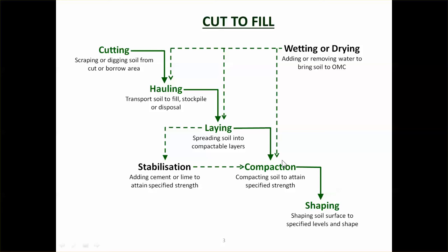Then there's compaction. Once you've got it into that 200 to 300 millimetre layer, you are going to compact it using compactors or rollers. At the same time you'll be shaping. The compaction and shaping often happen together — you do the preliminary compaction first, but the compaction and shaping of the surface layer are normally carried out together, with a compactor and a grader working together.